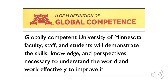The framework's statement of global competence was our starting point. The statement is: 'Globally competent University of Minnesota faculty, staff, and students will demonstrate the skills, knowledge, and perspectives necessary to understand the world and work effectively to improve it.' This is just 27 words, but if we read closely, we see important messages essential to an internationalized university and class. First, the question of who is involved — faculty, staff, and students — everyone. This isn't just about any single or specific group; the idea is that everyone is involved.